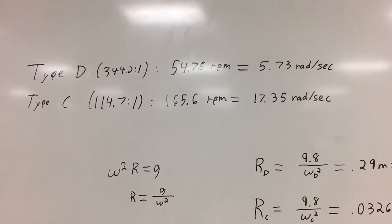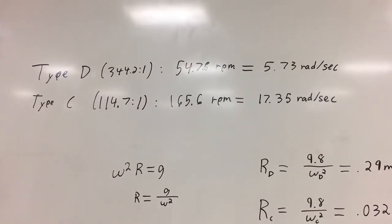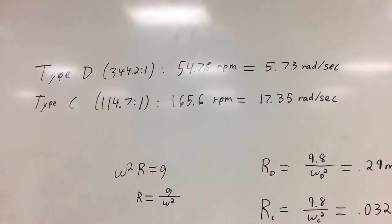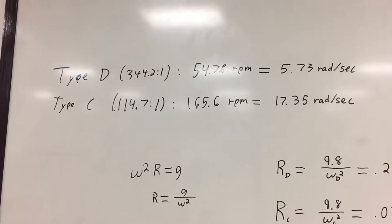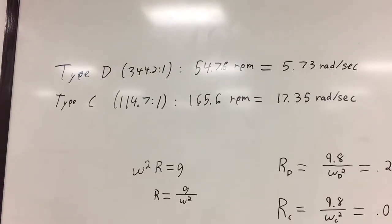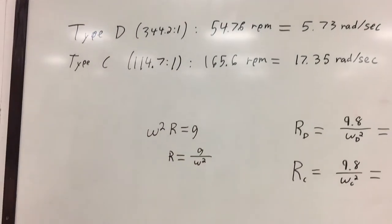We found the rotational velocities of our two larger gear ratios, type D and type C. We found first RPM and we converted that to radians per second so that we could move on to our radius calculation.